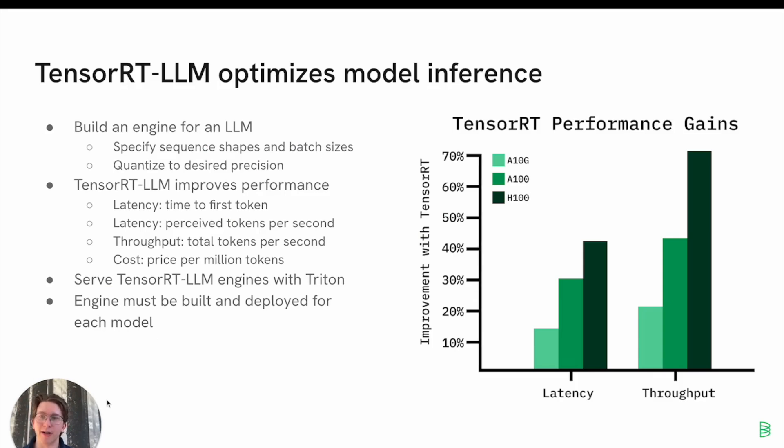You use it to build an engine for a large language model that is optimized for the specific model, sequence shape, batch sizes, quantization, everything that you're going to do in production. And it builds this optimized engine with CUDA kernels that are specifically targeted for your exact use case. That's going to improve your latency, improve your throughput, time to first token, tokens per second, all that sort of stuff.